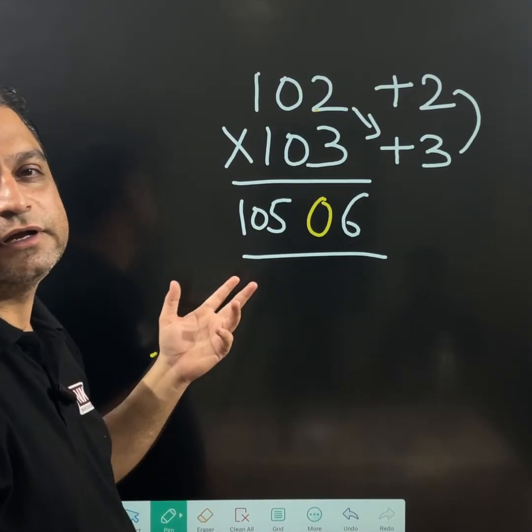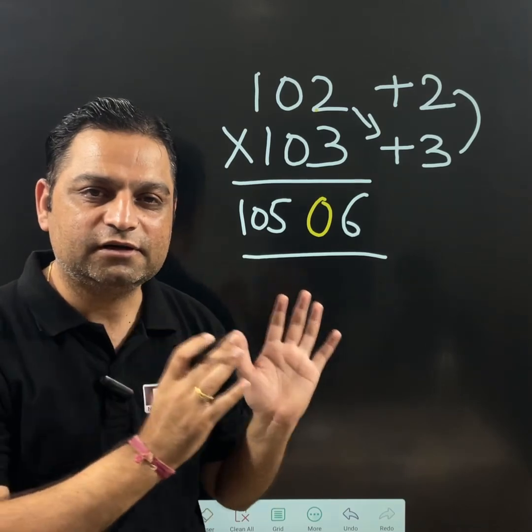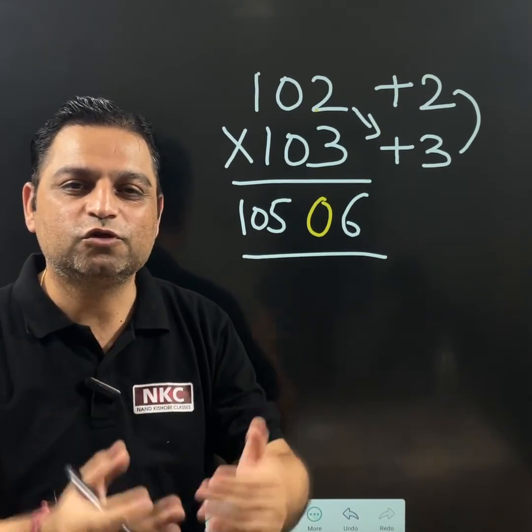102 plus 3 is 105. This is going to be the final answer. I hope you are able to understand the concept properly. Thank you so much for watching the video.